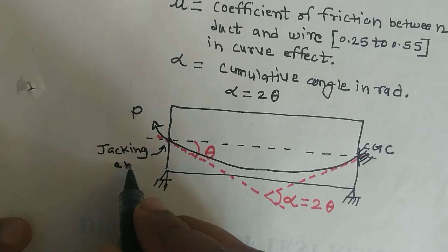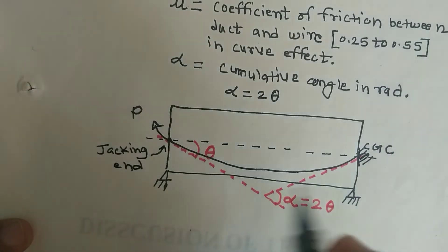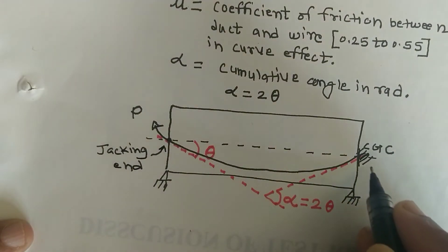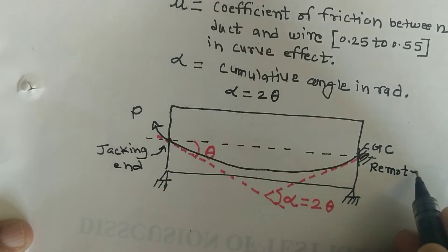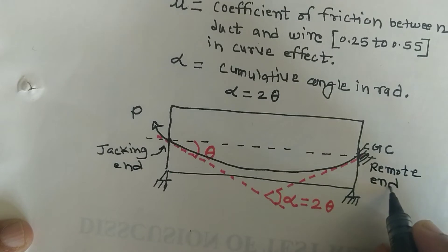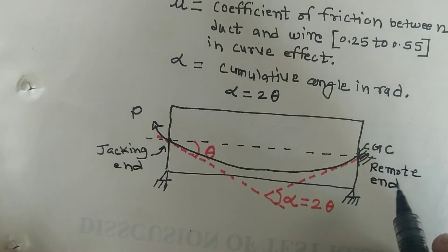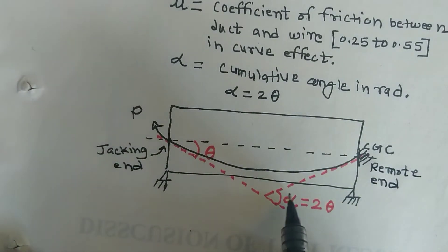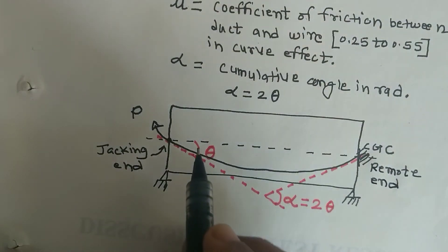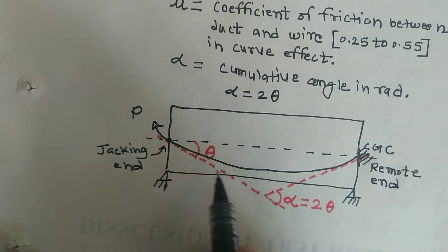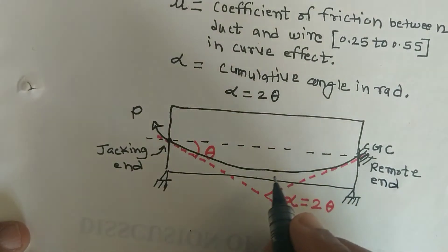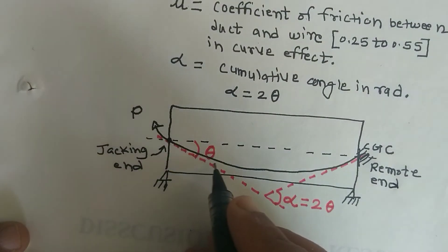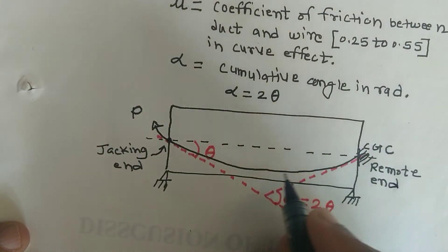This end is called the jacking end and the other end is called the remote end. Alpha is nothing but double of theta, and theta is the angle made by the tangent at the jacking end. This is the parabolic cable profile of the tendon.